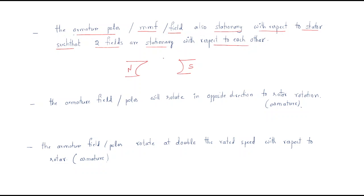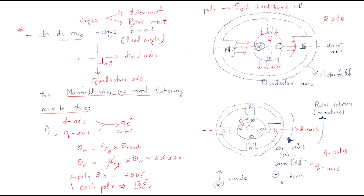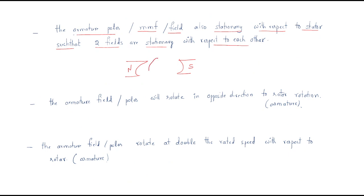The second point is that the armature poles and MMF field are also stationary with respect to the stator. Once a south pole and north pole are formed on the armature, they are fixed — there is no change. The south pole here and north pole here, once formed, are always constant. There is no change in the armature pole positions either.